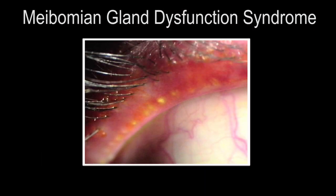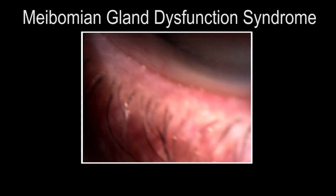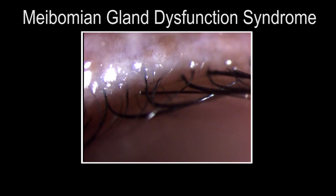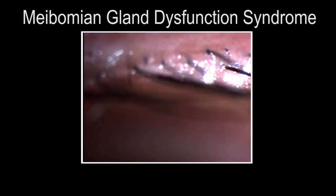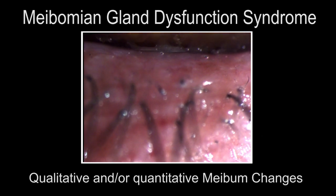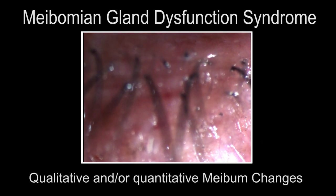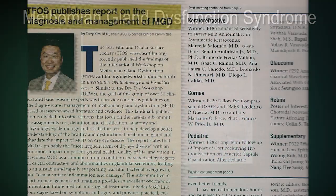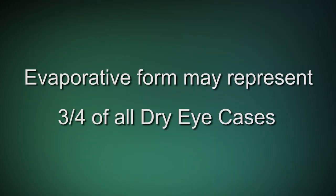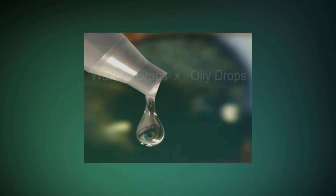According to them, MGD is a chronic condition, diffuse of the meibomian gland, commonly characterized by terminal duct obstruction and/or qualitative or quantitative changes of the glandular secretion. Both the report and TFOS studies indicate that the evaporative form due to an abnormal lipid layer is responsible for three-quarters of all cases of dry eye.